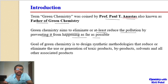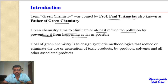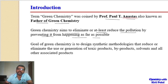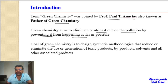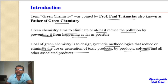In green chemistry, we aim to change processes in such a way that they either eliminate or at least reduce the pollutions that are happening, so that there will be changes in chemical reactions. Chemical processes are designed according to green chemistry principles. The goal is to design synthetic methodologies that reduce or eliminate the use or generation of toxic products, byproducts, solvents, and all other associated products.